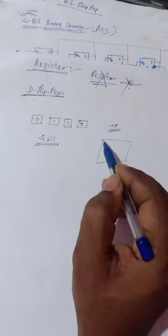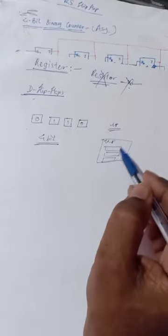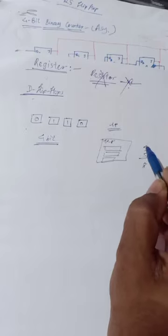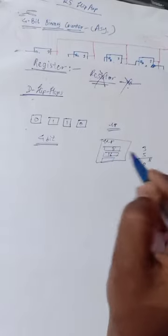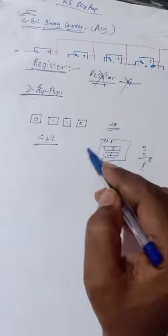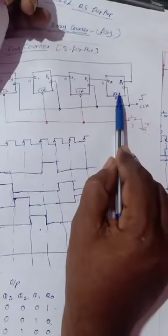Such registers are used to store temporary information in the microprocessor. Microprocessors have several inbuilt registers to store intermediate data or intermediate results during processing. For example, if we add 3, 5, and 8: first 3+5=8 is stored in a register, then 8+8 is computed and that result is stored. Another use of shift registers is shifting data, as we saw in the ring counter — data can be shifted left or right.